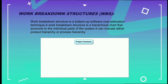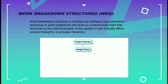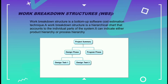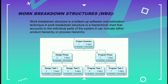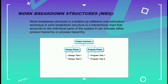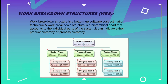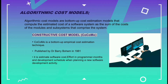Work Breakdown Structure (WBS) is a bottom-up cost estimation technique. It is a hierarchical chart that accounts for the individual parts of the system, and can be either a product hierarchy or a process hierarchy. Product hierarchy identifies product components and how they are interconnected, while process hierarchy identifies work activities and the relationships among them.